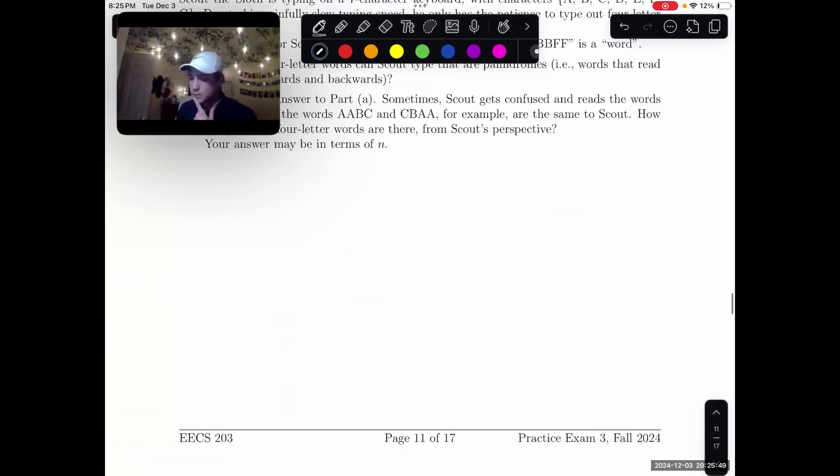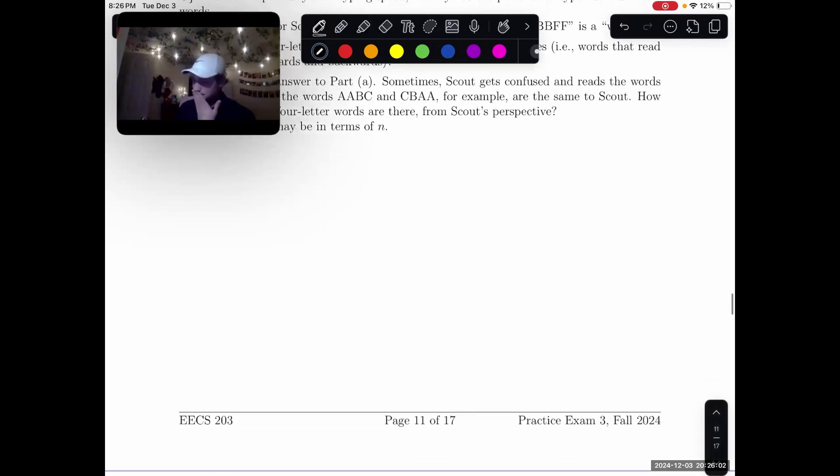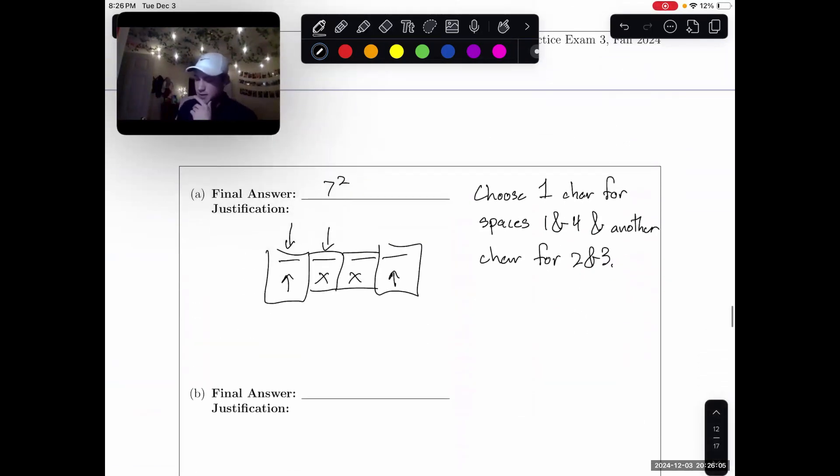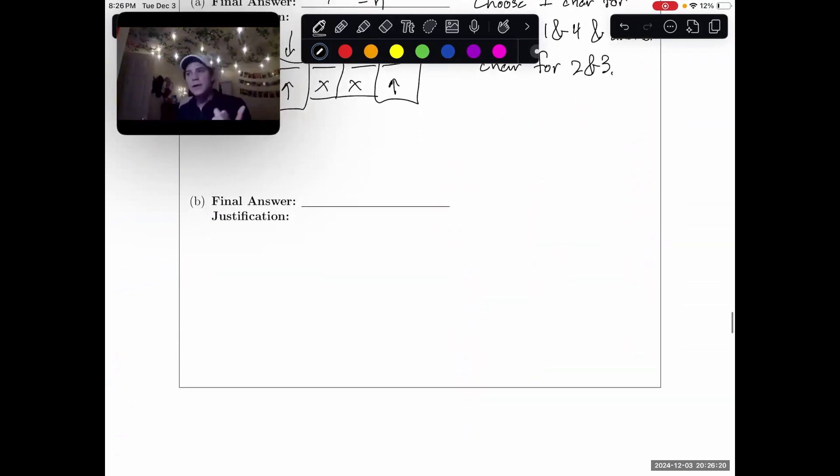Now let's look at part B. Let N be the answer to part A. Sometimes Scout gets confused and reads the words backwards. How many unique four-letter words are there from Scout's perspective? It references our previous answer, and we should probably be using that. That's urging us to think about words that are palindromes. Words that are palindromes and not palindromes is probably a helpful distinction here. So let's break off into cases.